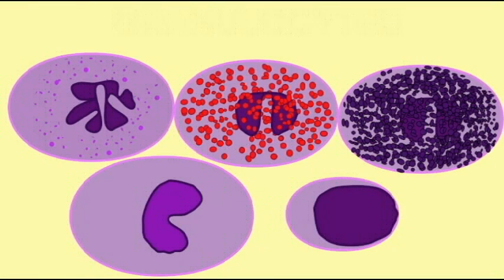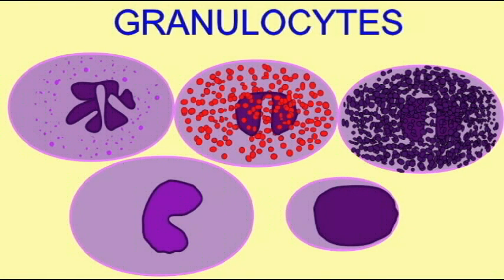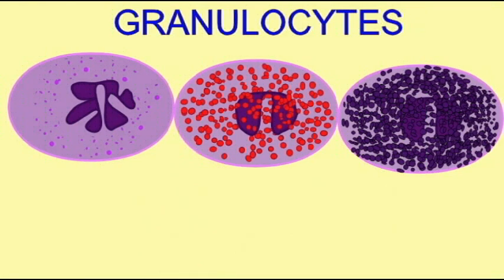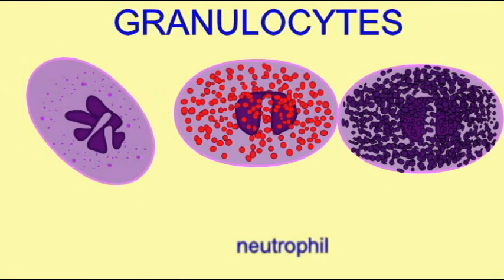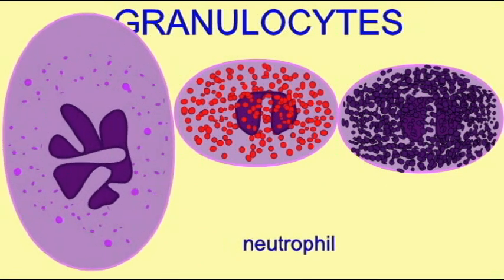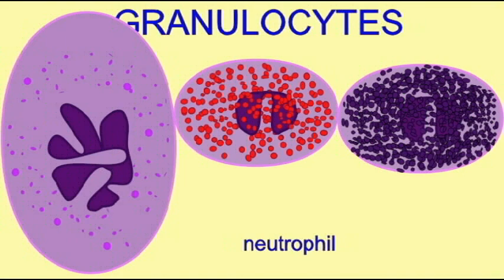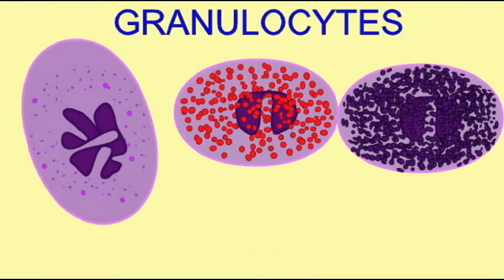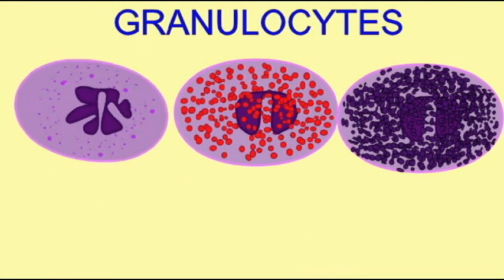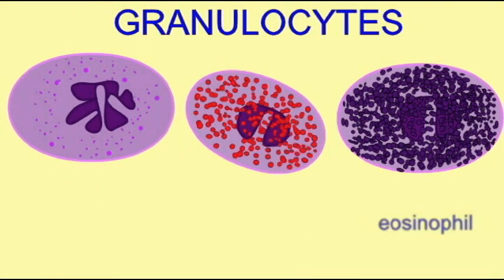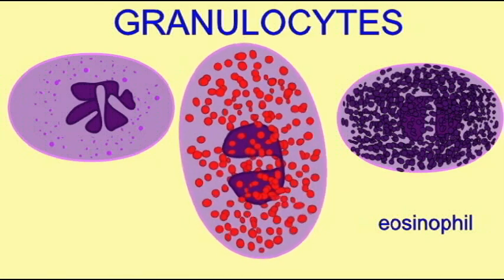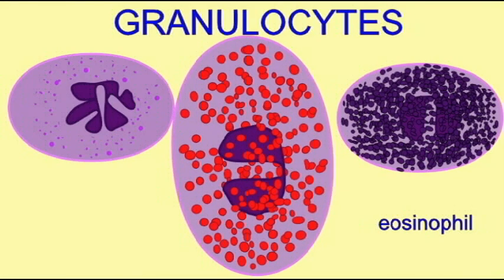Leukocytes can be divided into two classes. First, the granulocytes, whose specialized lysosomes take up dyes of the right stain, and the agranulocytes, who don't. Granulocytes include the neutrophils, the most common white blood cells.